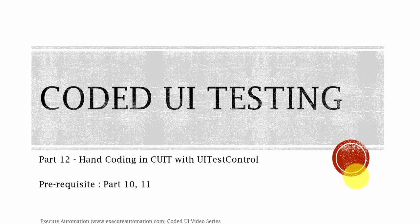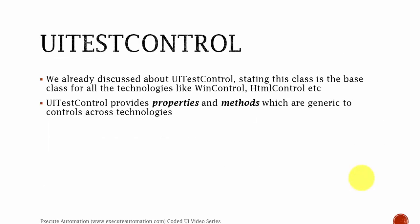In this part, we're going to discuss about UI test controls. So far in parts 10 and 11, we were discussing about hand coding coded UI tests using Windows controls like win windows, win buttons, and how to search and identify the control using its search properties. But in this part, we're going to take its base class, which is nothing but UITestControl, and work from there. We already discussed that UITestControl is the base class for all technologies like win controls, HTML controls, WPF controls, or whatever controls you like.